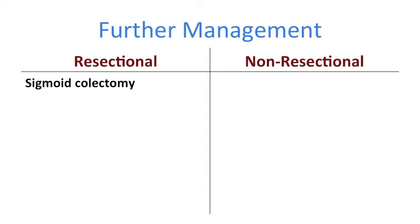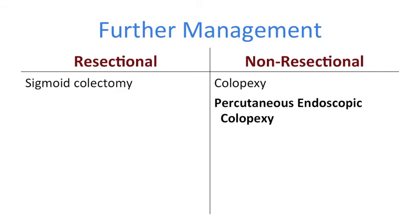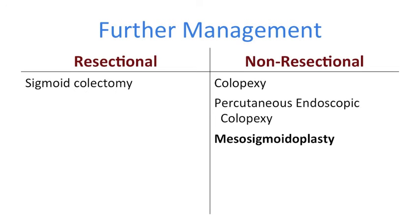Currently, sigmoid colectomy can get this recurrence risk down to below 5%. However, there are also non-resectional options that I don't think you need to know all that much about unless you are going to become a colorectal surgeon. These non-resectional techniques include colopexy, so that's anchoring the colon to try to stop it from twisting; there's percutaneous endoscopic colopexy, which is when a colonoscope is used together with a percutaneous endoscopic gastrostomy kit to anchor the sigmoid to the anterior abdominal wall; and lastly I'll mention mesosigmoidoplasty that some have advocated, which is about reconstructing the sigmoid mesocolon in a certain way.